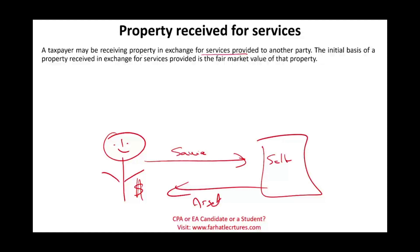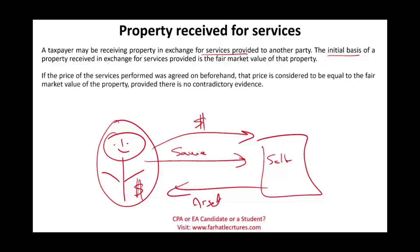The initial basis of the property received in exchange for services is the fair value of that property. However, if you agree with the seller on a price for your services upfront — for example, 'I will paint your business and I want $5,000' — then the price agreed upon beforehand is considered equal to the fair value of the property. So if you said your services are worth $5,000, the asset given to you is worth $5,000, unless there's contradictory evidence.